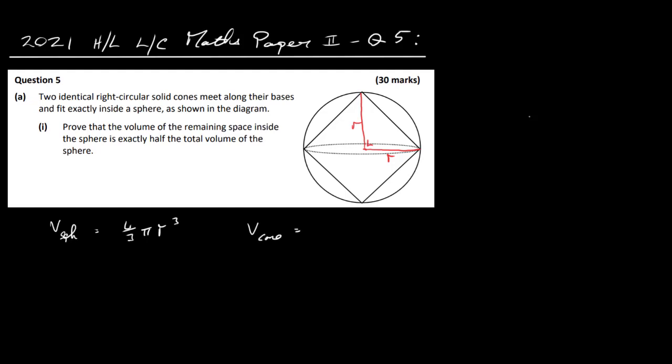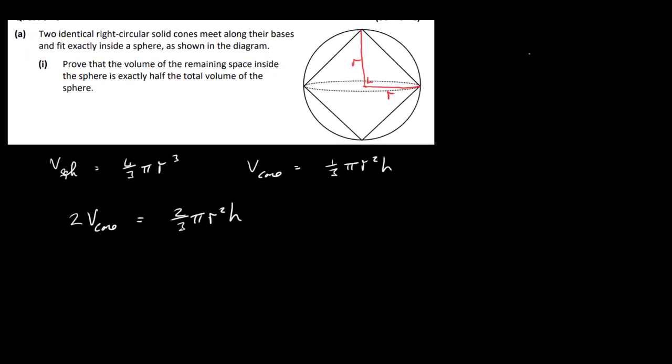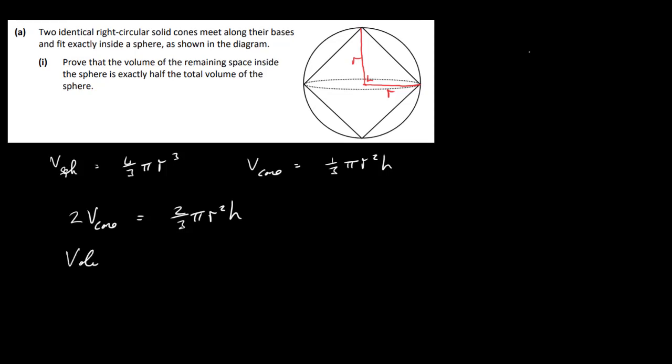The volume of a cone is 1 third pi R squared H. We have two cones, so what we've got to do is multiply this by 2. This is our total volume of the sphere. Subtract and see what we get. So let's take twice the volume of the cones. So that's going to be 2 over 3 pi R squared H. Now the volume of the empty space is going to be 4 over 3 pi R cubed minus 2 over 3 pi R squared H.